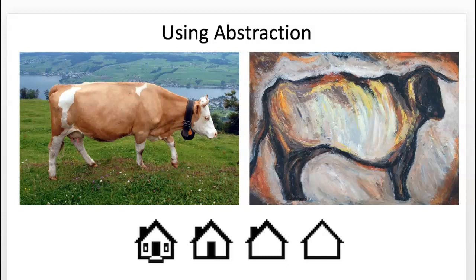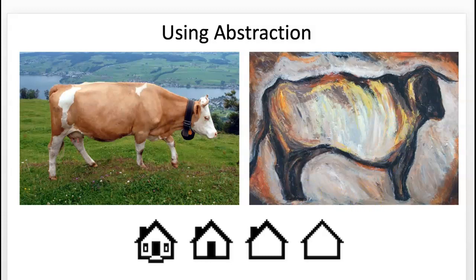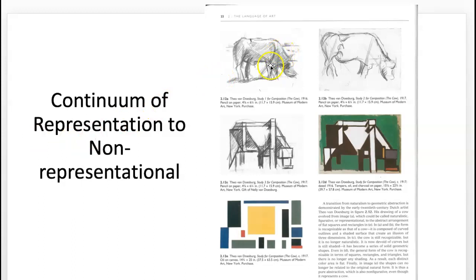In this project you're going to be using abstraction, which basically means simplifying your object into basic shapes and transforming it through that simplification process. Abstraction exists on a continuum — from photorealistic all the way down to really simple shapes. You can have all different steps, down to where it becomes non-objective or pure abstraction, where it's barely even connected to its original inspiration.